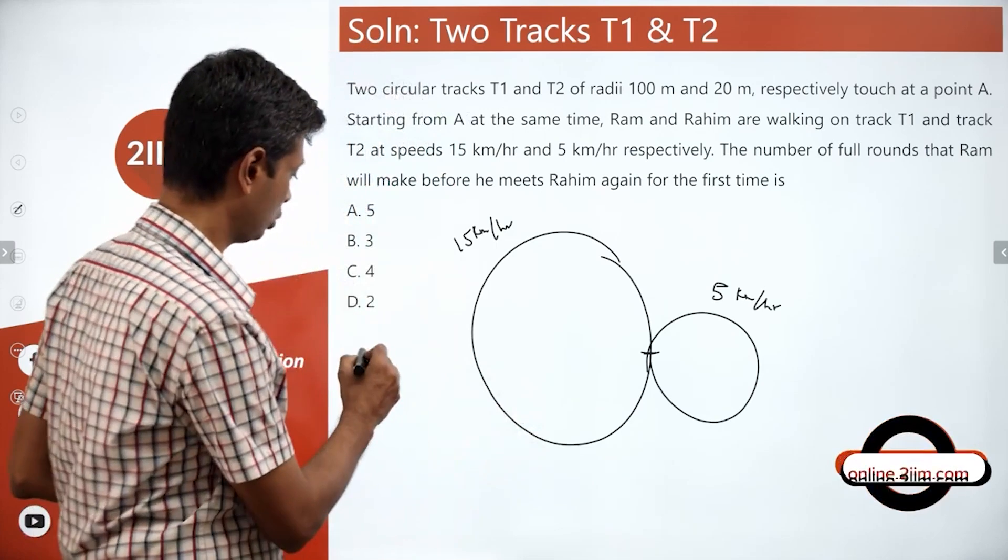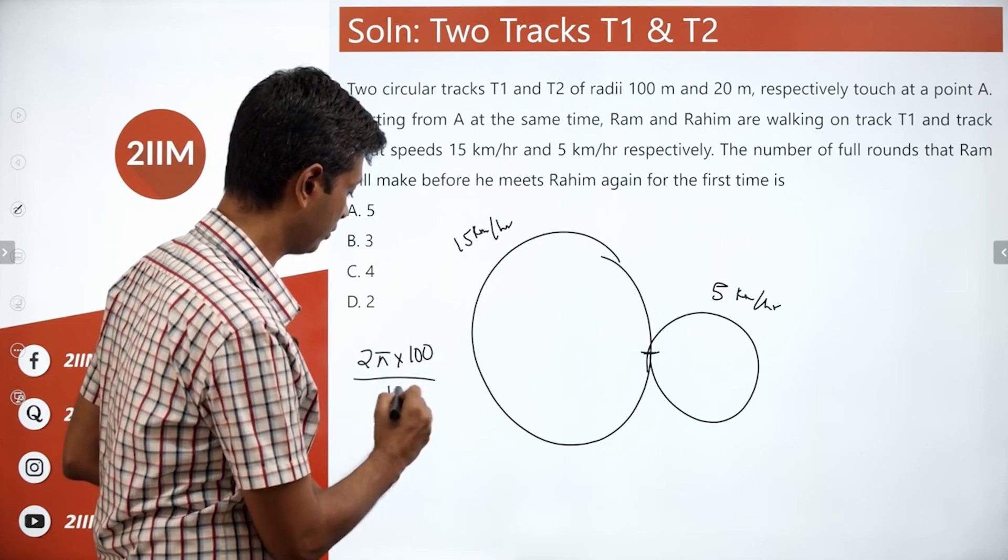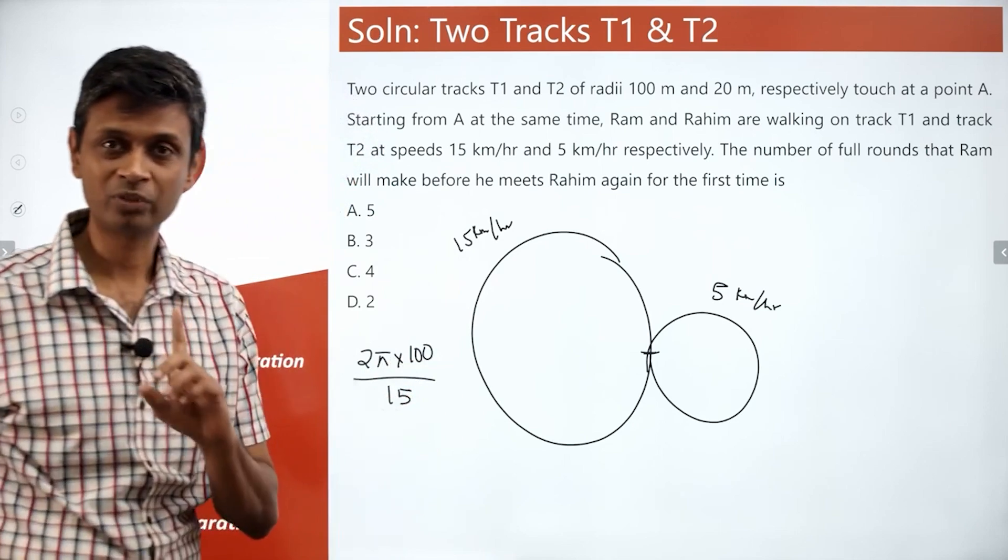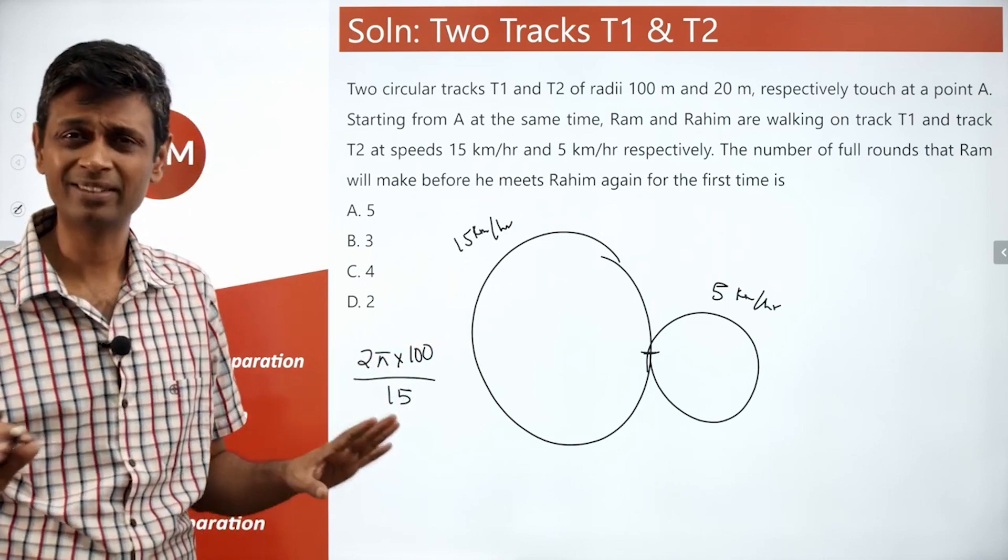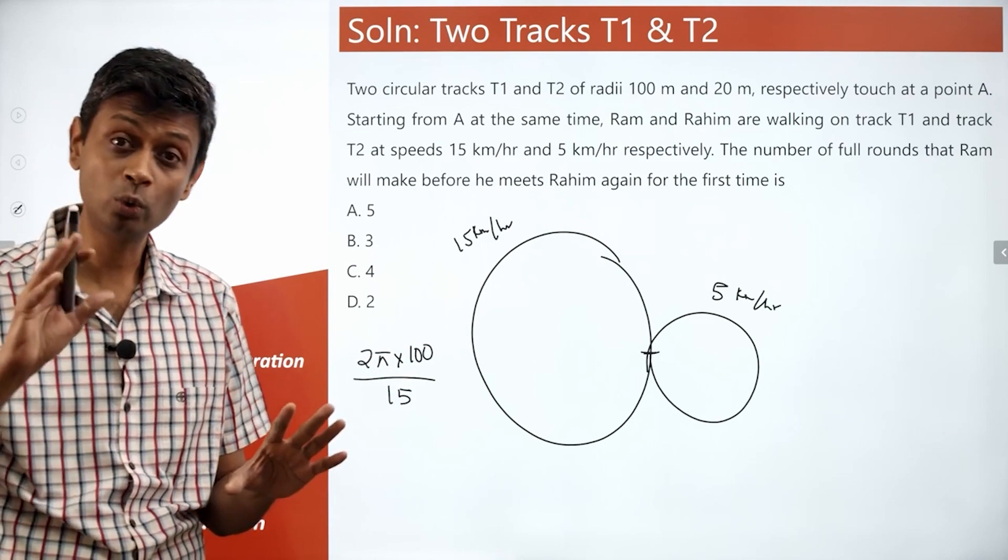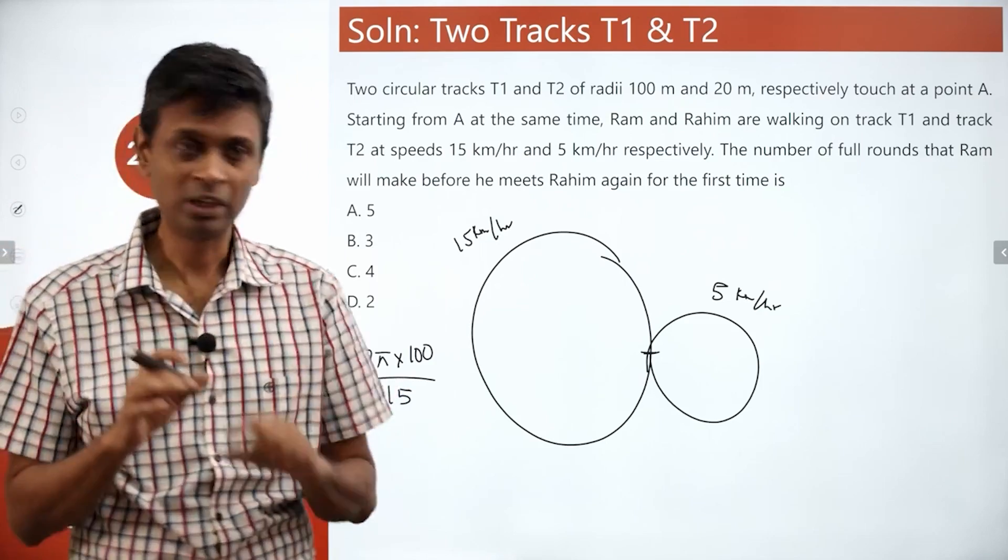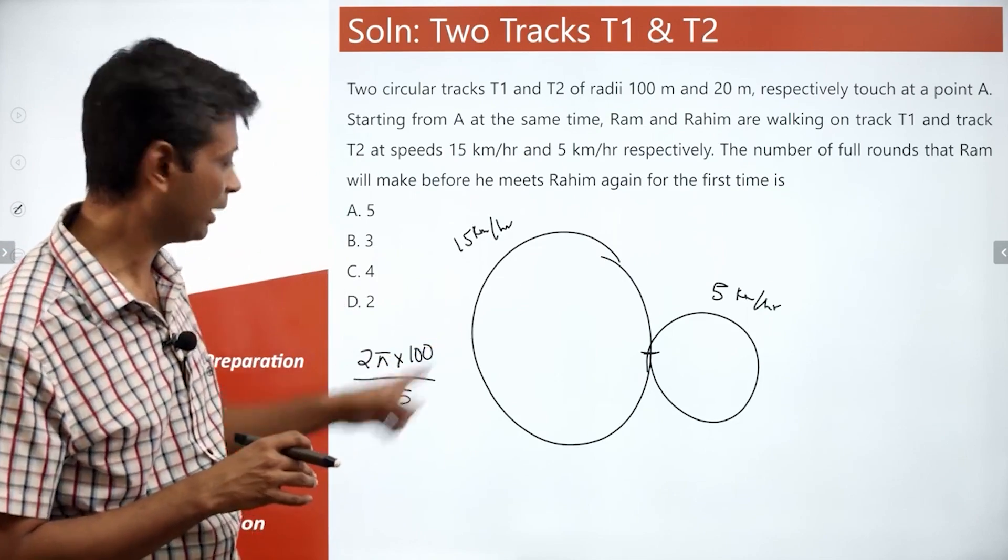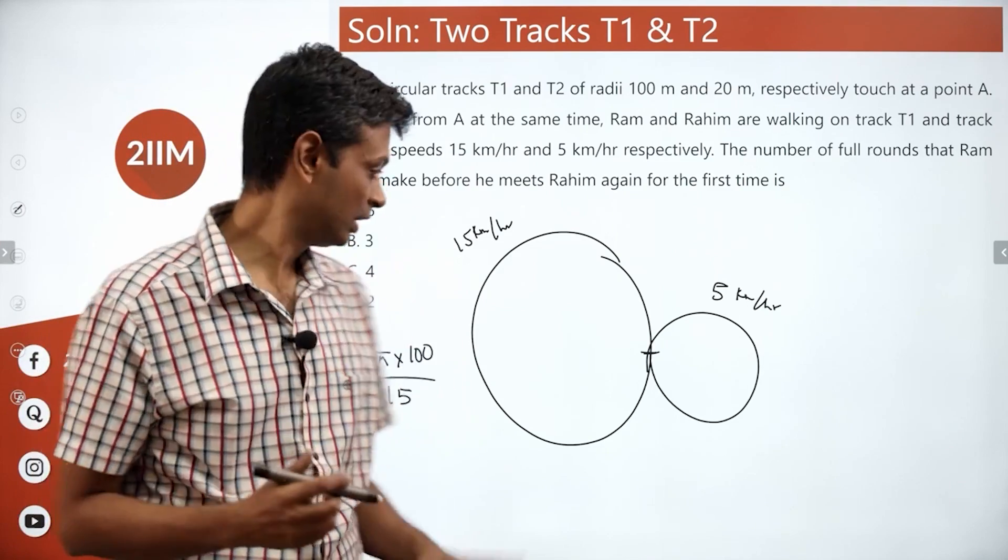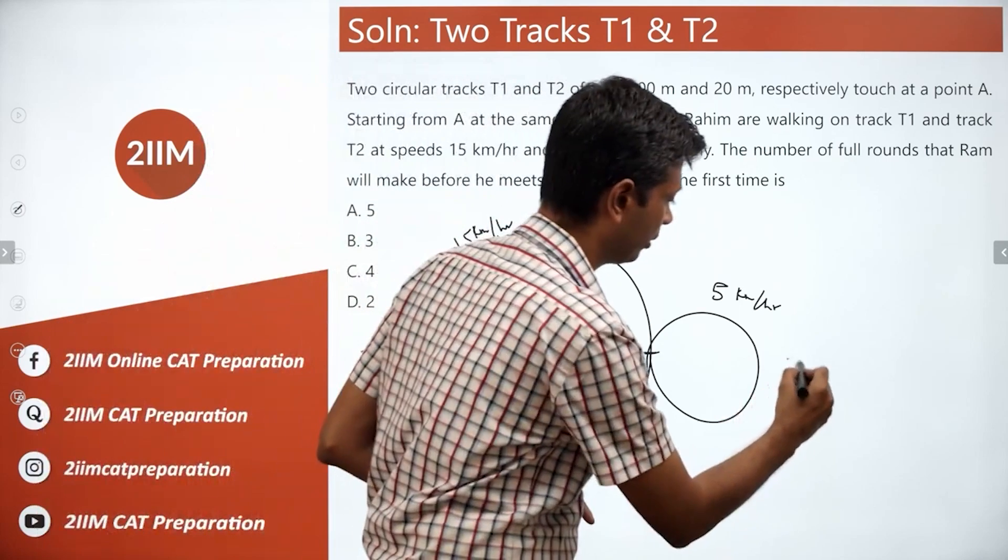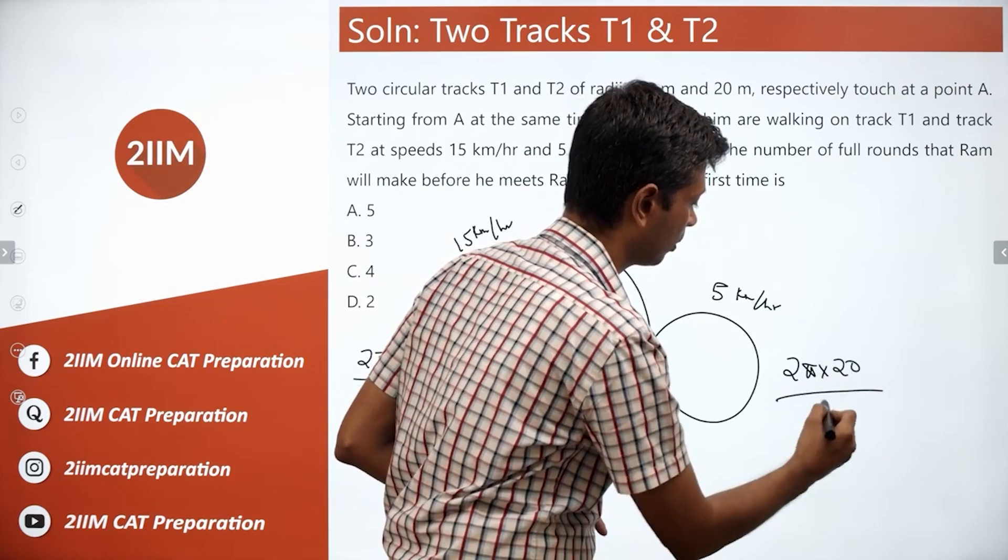So, time taken is 2 pi into 100 by 15. Remember, this is in meters, this is in kilometers per hour. I don't care. Right now, I don't care. We'll come to how we will fix it. But right now, I don't care about the units. That unit is actually hour by kilometers. Whatever that unit is. We don't care. I'm not looking to write it in seconds.